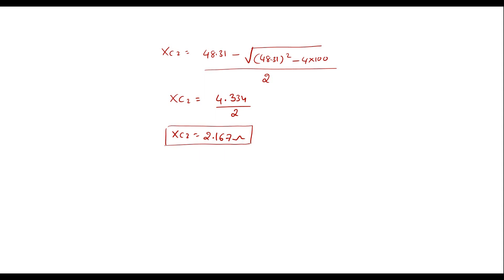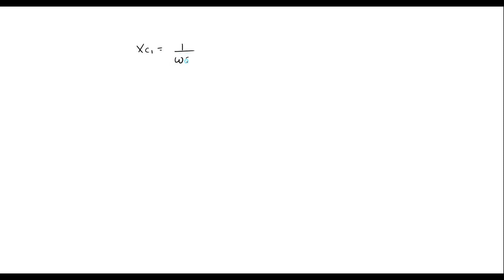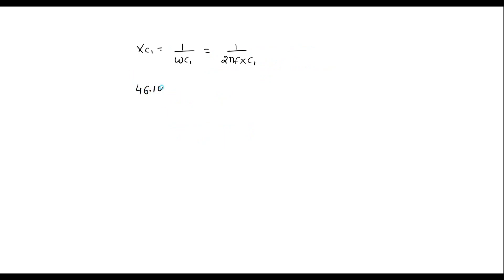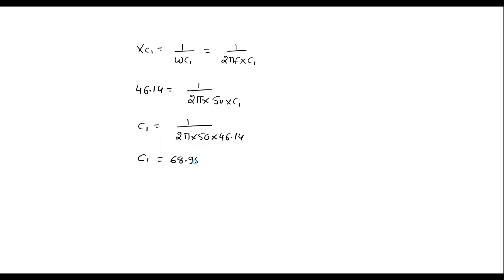With XC1 and XC2, we can easily find C1 and C2. We know that XC1 = 1 / (ω·C1) = 1 / (2π·F·C1). XC1 is 46.14, so 46.14 = 1 / (2π × 50 × C1). Therefore, C1 = 1 / (2π × 50 × 46.14), which gives C1 = 68.98 × 10⁻⁶ farad, that is C1 = 68.98 microfarad.